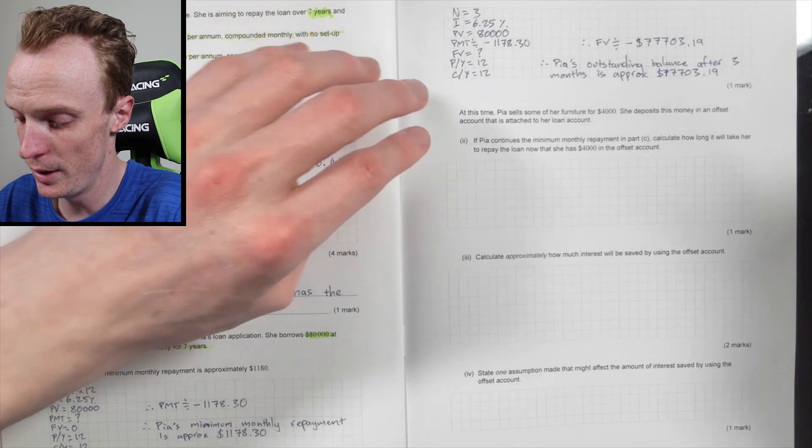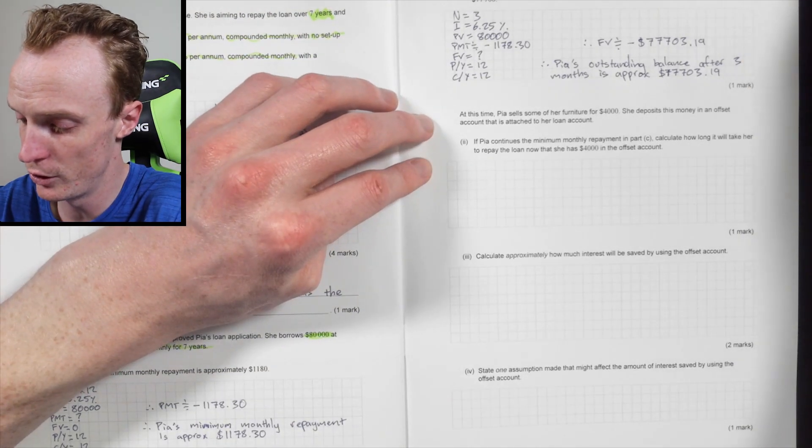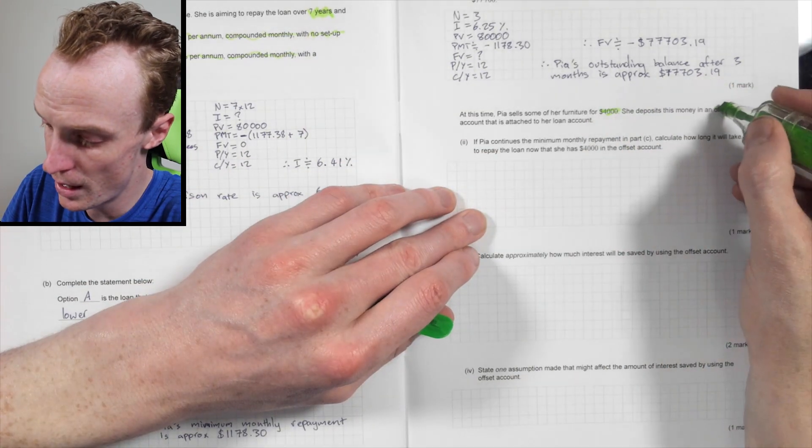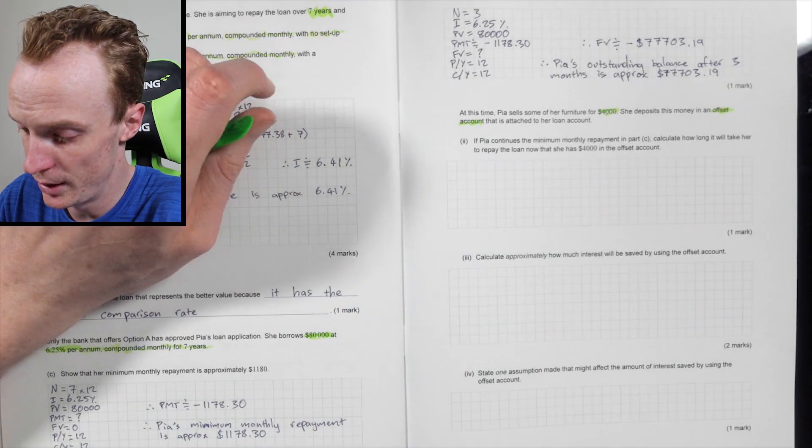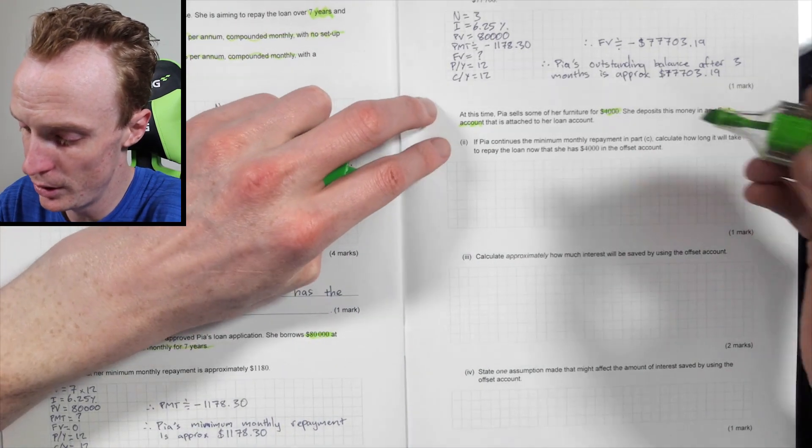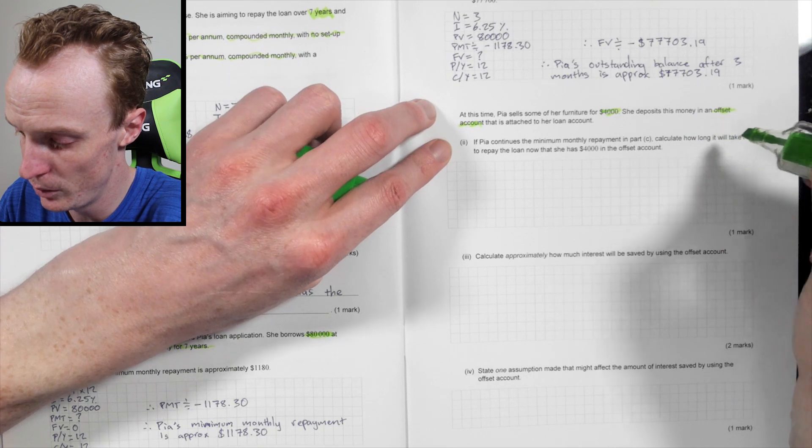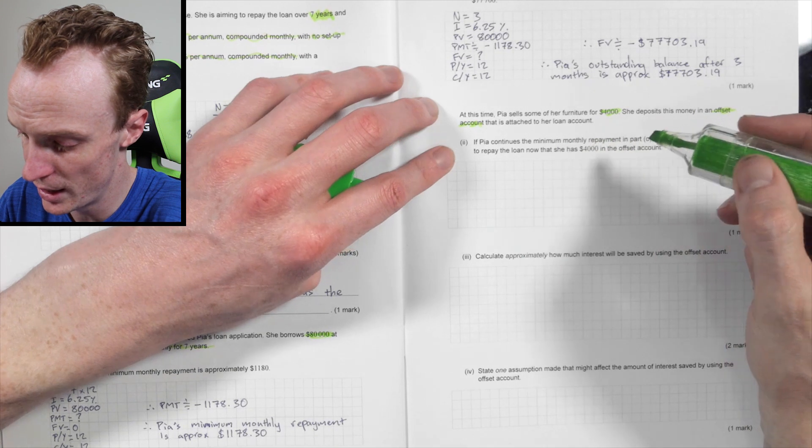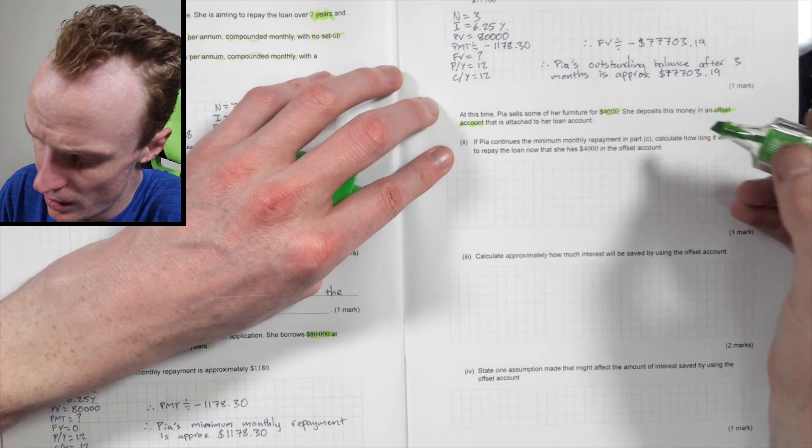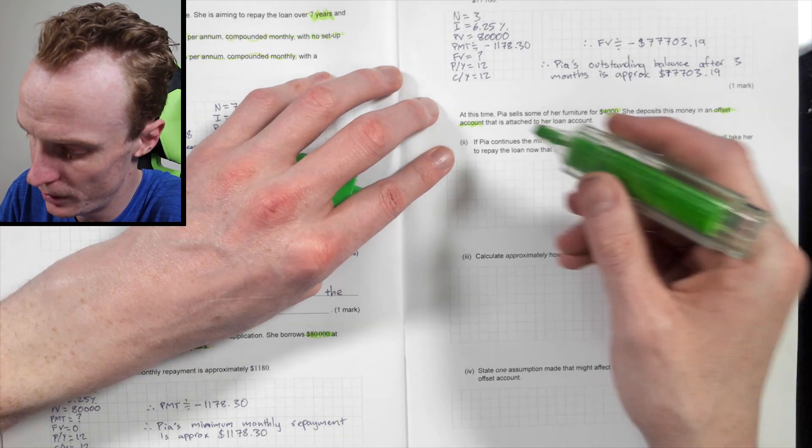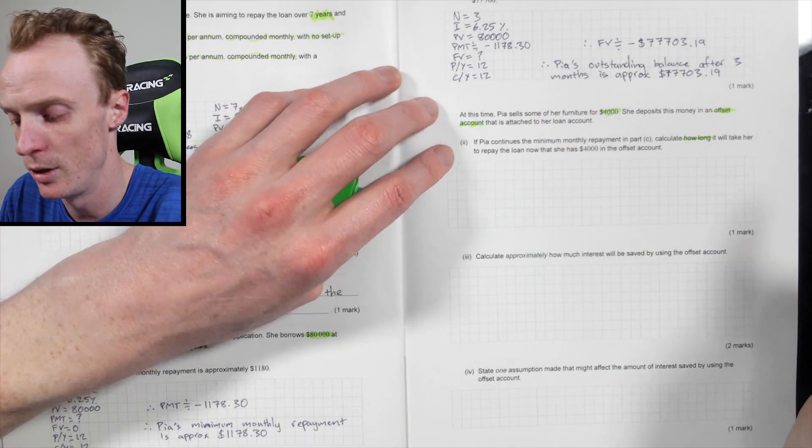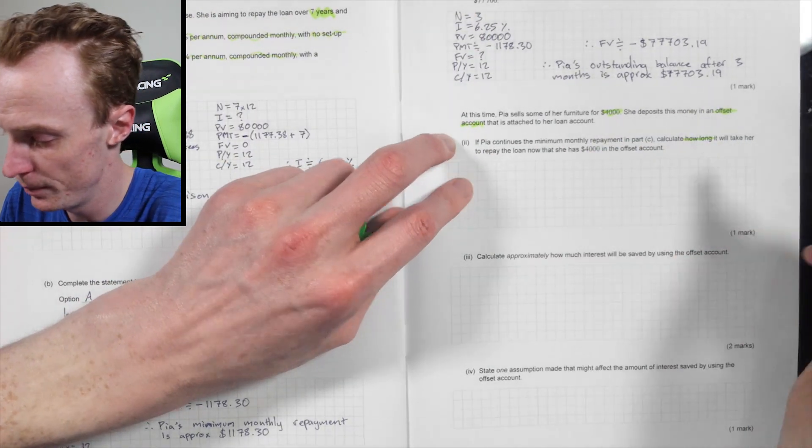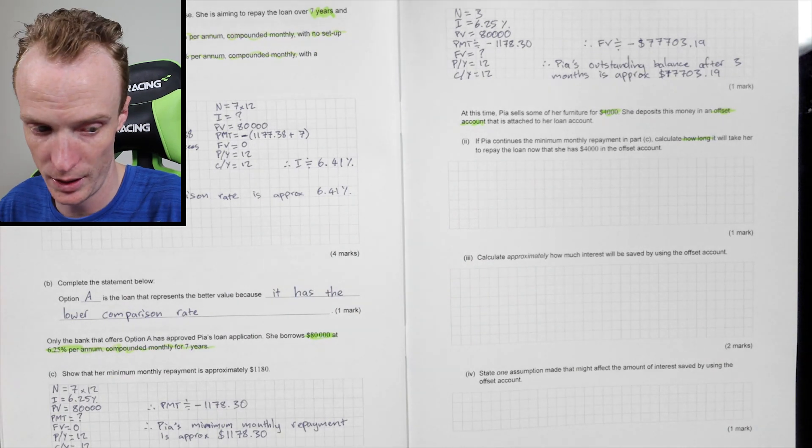Alright. So in that time, Pia sold some of her furniture for $4,000. She deposits this money in an offset account. There's attached to the, her loan account. If Pia continues the minimum month repayments in part C, how long will it take for her to repay the loan now that she has $4,000 in the offset account? Now, how long, it's not how much longer that's saying I am reading about this. So it's how long total. So it's including the three months that we've got up here.